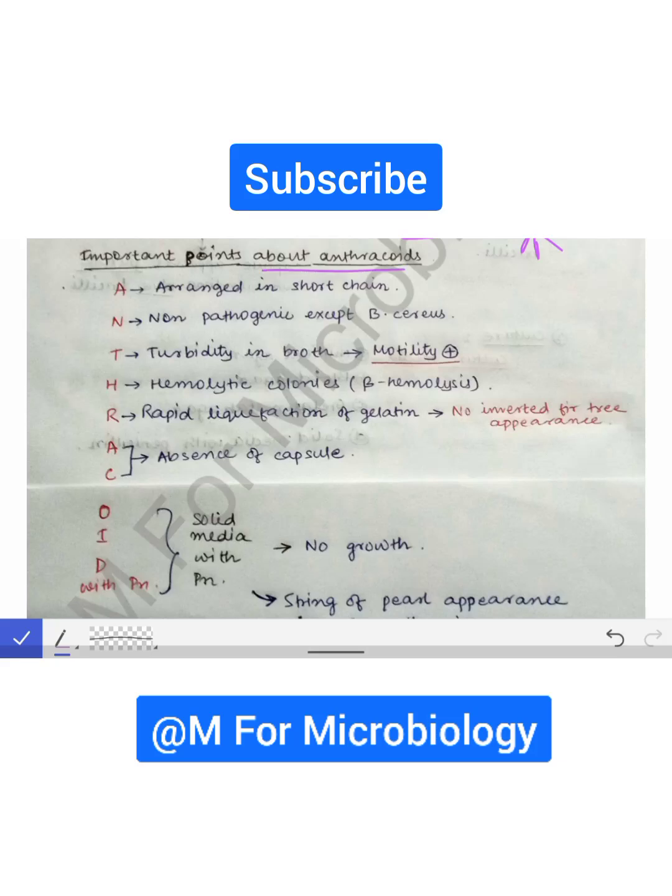Important points about anthracoids. I have written 'Anthracoids with Penicillin.' What is the meaning of A? A means it is arranged in short chains. What is the meaning of N? N means it is non-pathogenic except Bacillus cereus, which causes food poisoning.